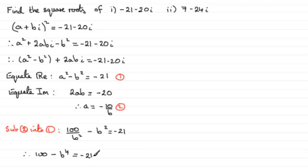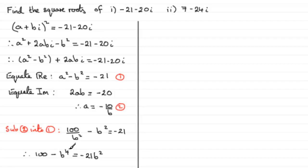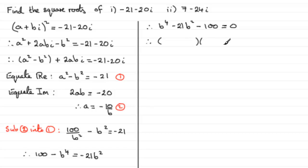Rearranging by adding b to the power 4 and subtracting 100 from both sides, we get b to the power 4 minus 21 b squared minus 100 equals 0. What we have here is a quadratic in b squared, and it does factorize: it becomes b squared minus 25 times b squared plus 4 equals 0, which gives us minus 100 and minus 21 b squared when expanded.